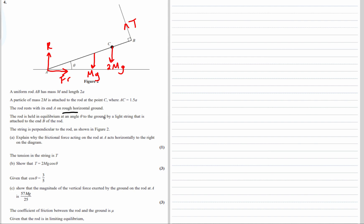We've also got some measurements: length of 2a, so to the center is a, and AC is 1.5a. Part A: explain why the frictional force acting on the rod at A acts horizontally to the right on the diagram. Why is friction going to the right? Because forces left equal forces right, and the tension — part of the tension — acts to the left. There are no other forces left or right, so friction must be equal to that in the opposite direction.